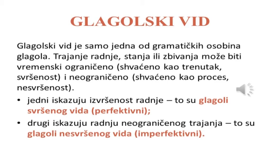Glagoli se mijenjaju po licima, po vremenima i načinima. Promjena glagola po licu, vremenu ili načinu naziva se konjugacija. Glagolski vid je samo jedna od gramatičkih osobina glagola. Trajanje radnje, stanja ili zbivanja može biti vremenski ograničeno ili shvaćeno kao trenutak – svršenost, i neograničeno – shvaćeno kao proces, nesvršenost.